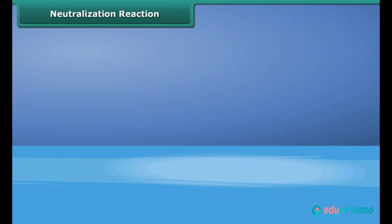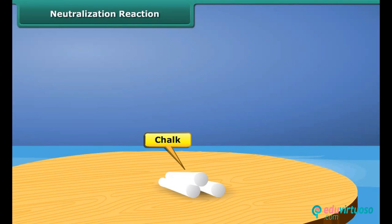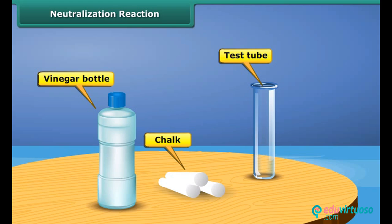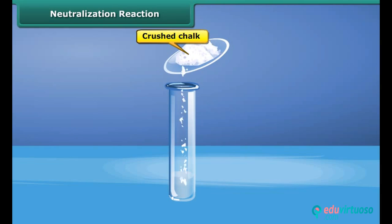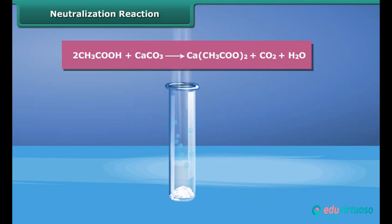Let us do an activity to understand neutralization reaction. Materials needed: a piece of chalk, vinegar, and a test tube. Drop some crushed chalk into the test tube and add vinegar. Watch what happens — the chalk reacts with the vinegar and bubbles of carbon dioxide come out. A white solid is formed, which is calcium acetate.